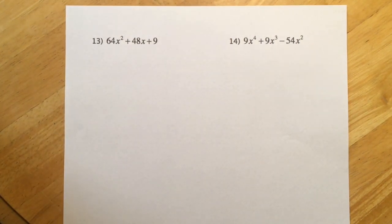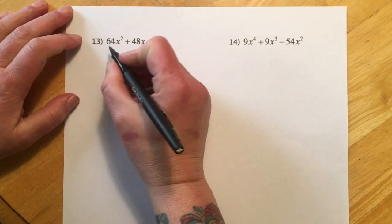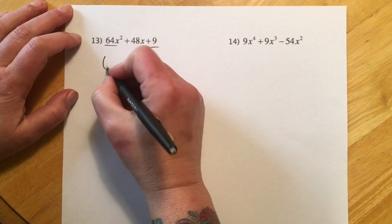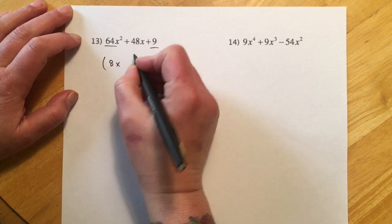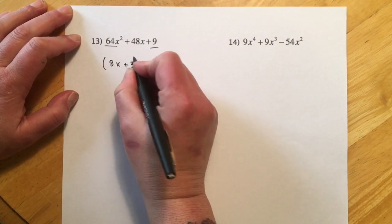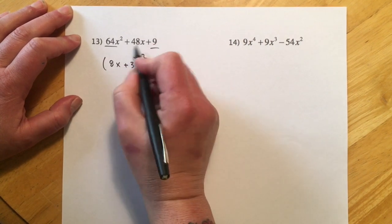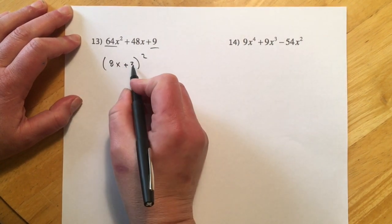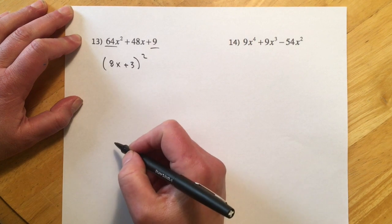Number 13 is just kind of a classic. Squares on the ends. So we see a 64 and a 9. We just got to go 8X and then 9. It's going to break down to a plus 3 quantity squared. That 48 in the middle, 8 times 3 is 24. Double it, and there's the 48.